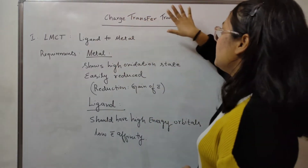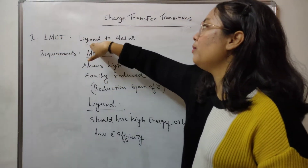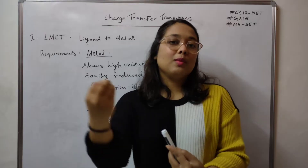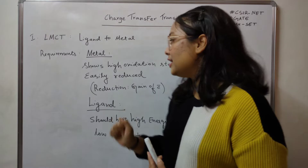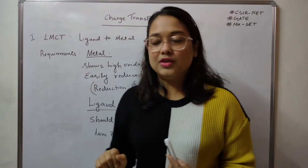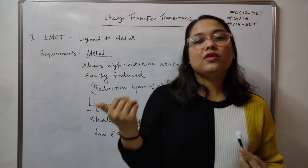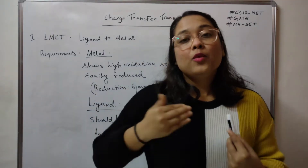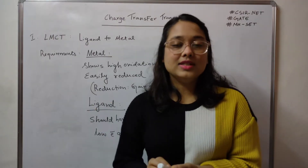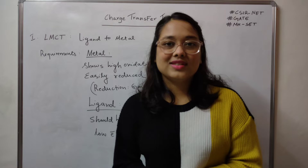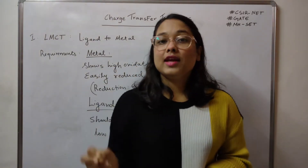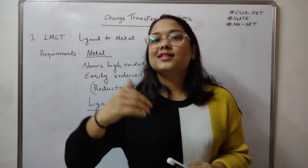In LMCT, the electron moves from ligand to metal, so the metal is accepting electrons. That's why the metal should get easily reduced — it should easily gain electrons without resistance. High oxidation state means the metal has vacant orbitals, so it has sufficient space to easily accept electrons from the ligands. If the metal has to accept electrons, it requires vacant orbitals — otherwise, where will it put the electrons?